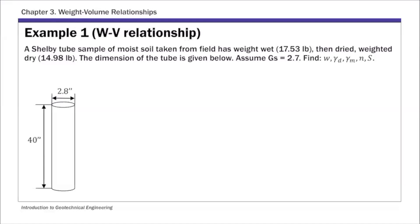This is example one, a Shelby tube problem. We have moist soil taken from the field. You can measure the total weight, then dry the soil sample in the oven to measure the dry weight of 14.98. The dimension of the Shelby tube is known, so we know the length and diameter. We're going to calculate moisture content, two unit weights, porosity, and degree of saturation.